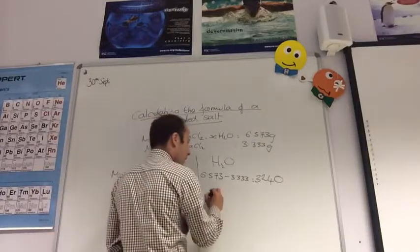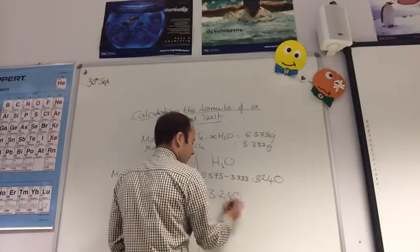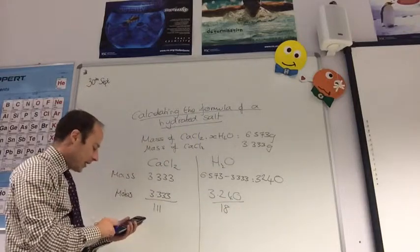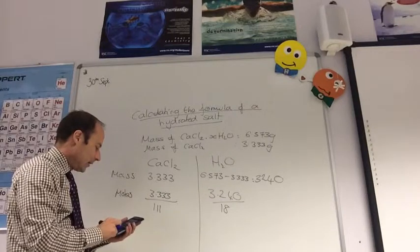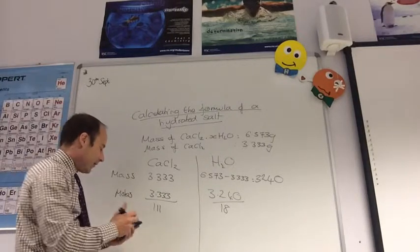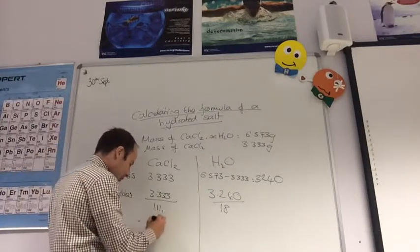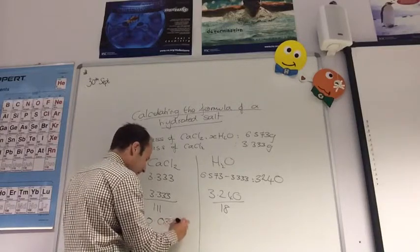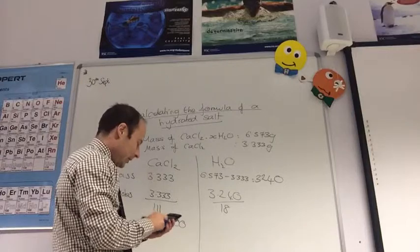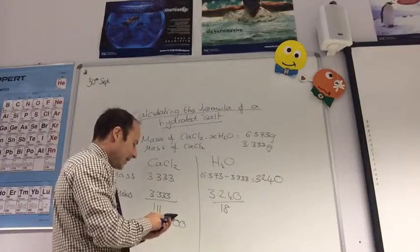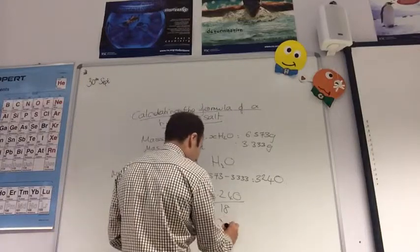Water we know is 18. So let's do that. 3.333 divided by 111. That comes to 0.0300. And this 3.240 divided by 18 comes to 0.18.